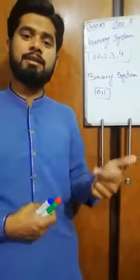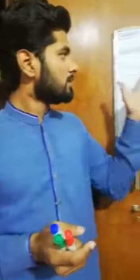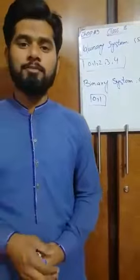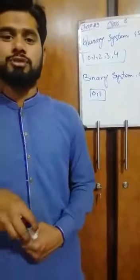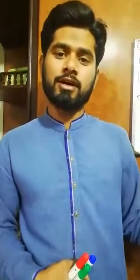Now we will see how a decimal number — the normal number we use — can be converted into the quinary, octal, or binary system. In the book, on page 67, there are rules written down. When we have a decimal number and want to convert it to octal, quinary, or binary, we divide the decimal number by the base of the target number system and collect the remainders.